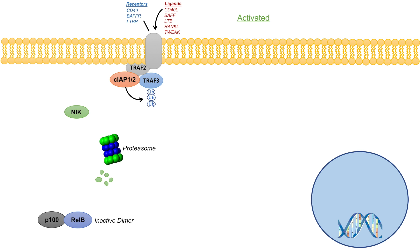In fact, instead of ubiquitinating NIK, CIAP actually ubiquitinates TRAF3, which then gets degraded. So in addition to CIAP not ubiquitinating NIK, it ubiquitinates TRAF3 instead, reducing TRAF3 levels. And remember, TRAF3 is what normally binds to NIK — so NIK is now free from its inhibition and degradation in the proteasome.